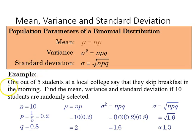So here's an example. You have one out of five students at a local college say they skip breakfast in the morning, find the mean variance and standard deviation if ten students are randomly selected. So out of the ten trials we're asking for students who say they skip breakfast.